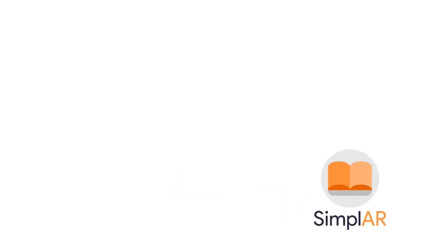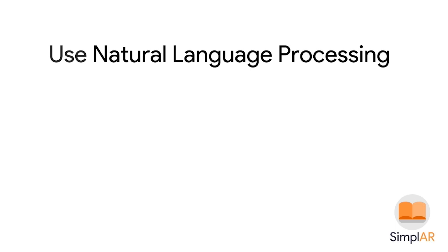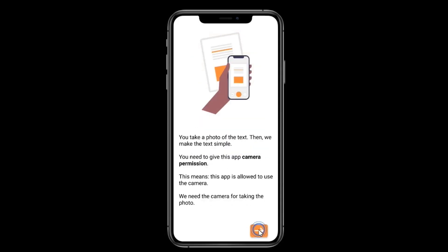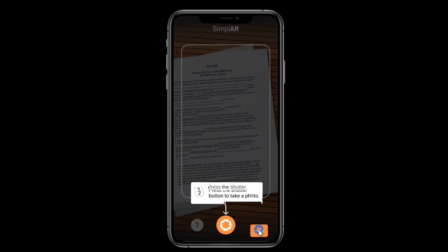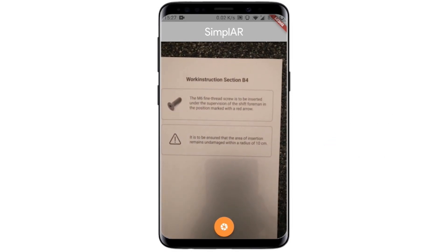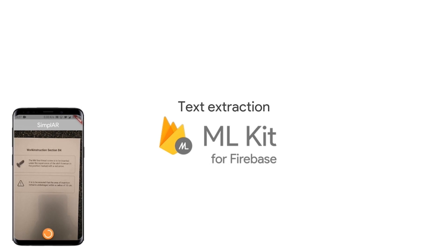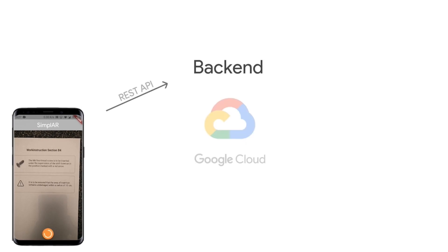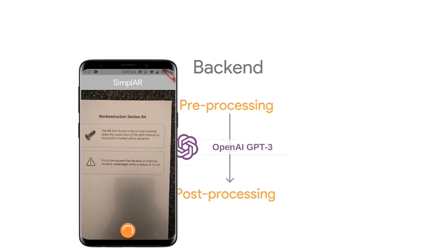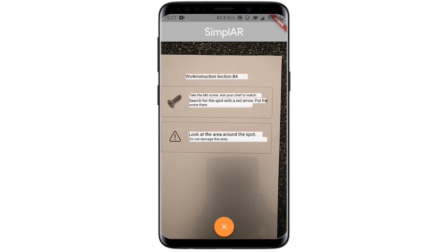This is where SimpleAR comes in. We are using the power of natural language processing to automatically translate any text for functionally illiterate people. When first opening the app, the user is introduced to the W3C verified disability-friendly UI. In our Flutter app, the user can scan any text. Firebase ML extracts the text and sends it to our backend hosted by Google Cloud. The backend uses a mix of GPT-3 and our own machine learning models to process the text into a simpler version.